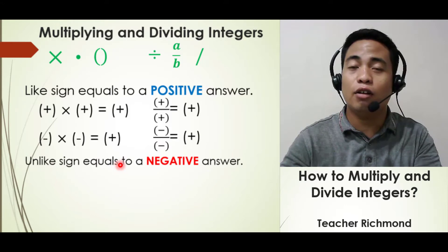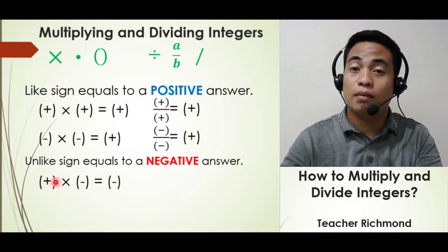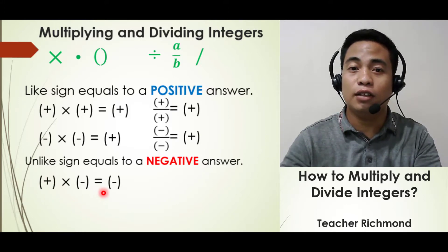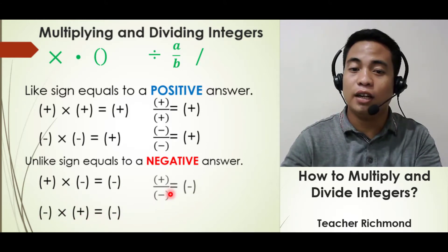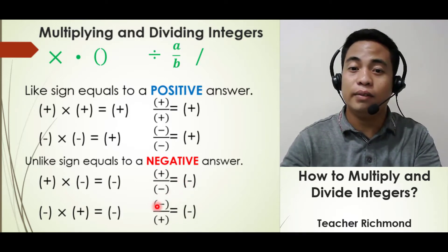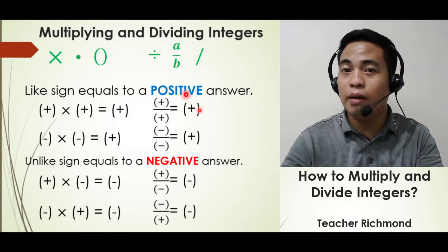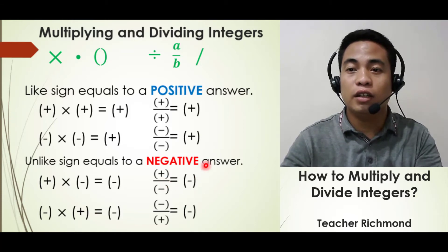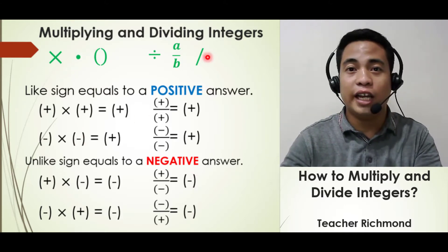The second rule: for unlike signs, the answer will always be negative. So positive times negative equals a negative answer, and negative times positive also equals a negative answer. Similarly, positive divided by negative equals a negative answer, and negative divided by positive is always negative. Remember these rules because they apply to every problem involving multiplication and division.